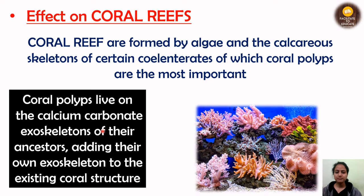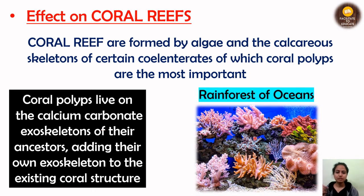Since coral reefs are based on calcium carbonate, the same chemical reaction discussed earlier will affect them too. Ultimately, the coral reefs will decrease and degrade day by day. Coral reefs are also called the rainforests of the oceans because they support a large variety of organisms — many types of small and large fishes are dependent on coral reefs for their food — and all of them will be affected by ocean acidification.